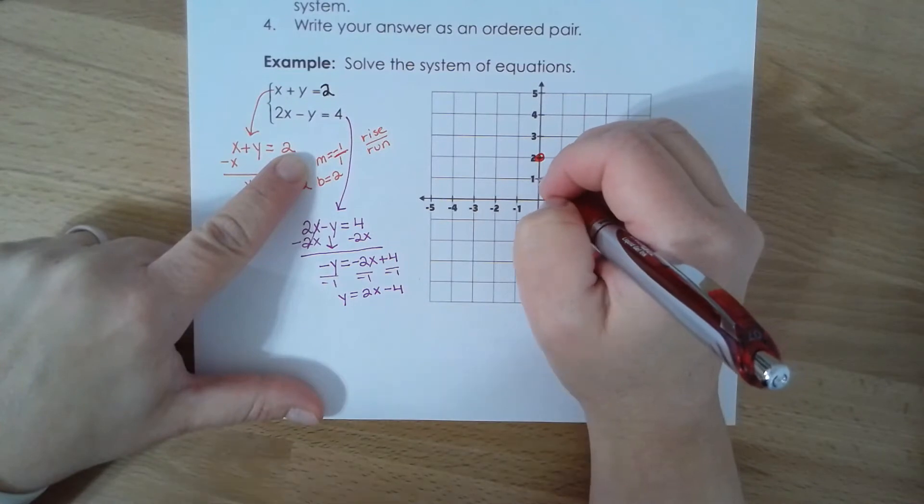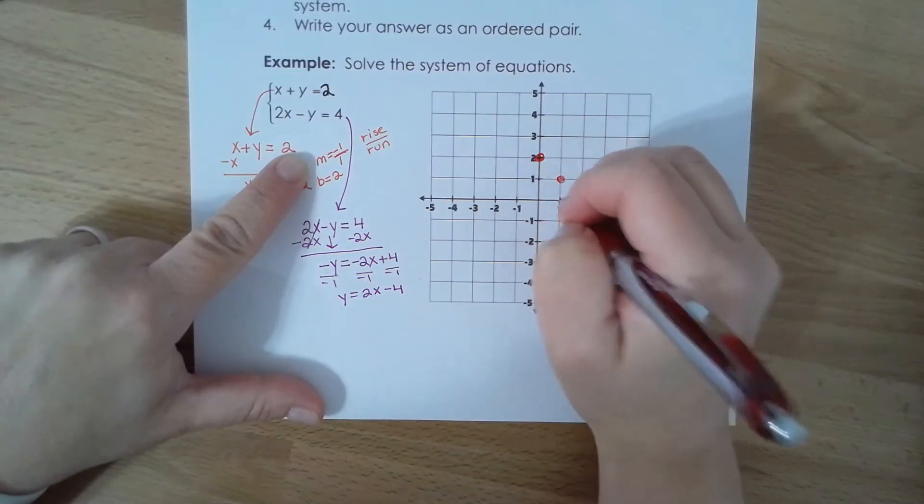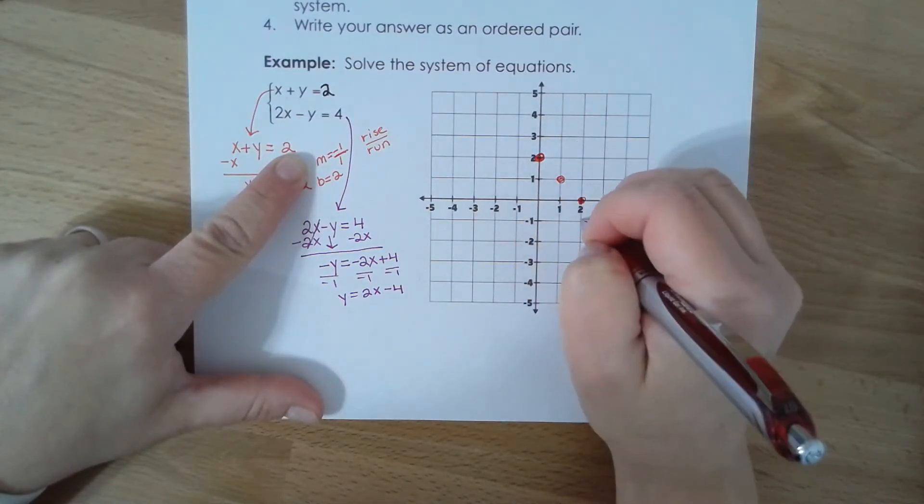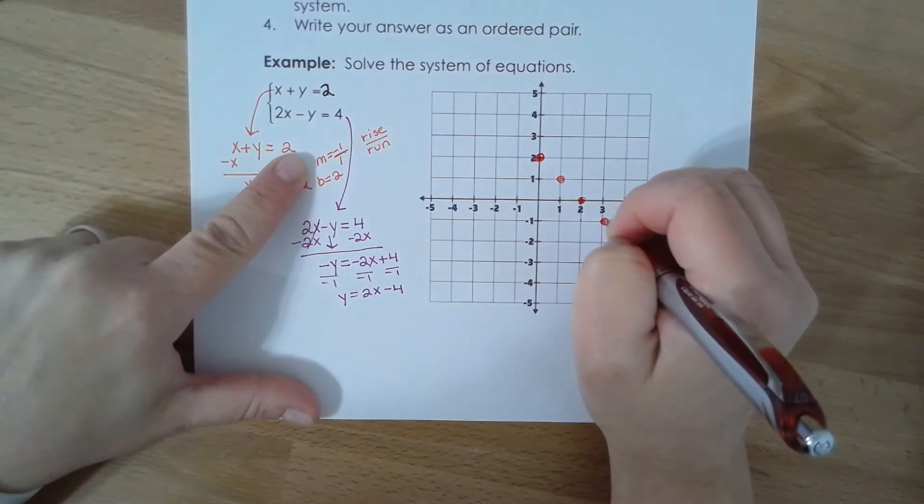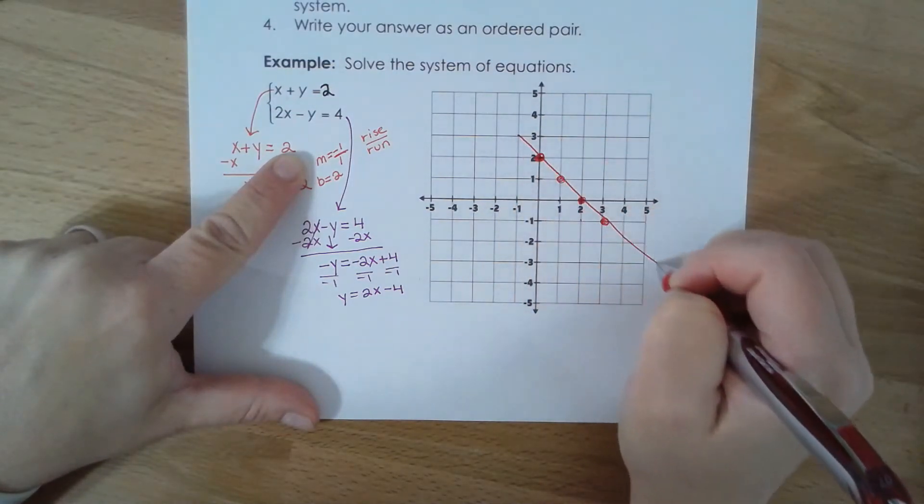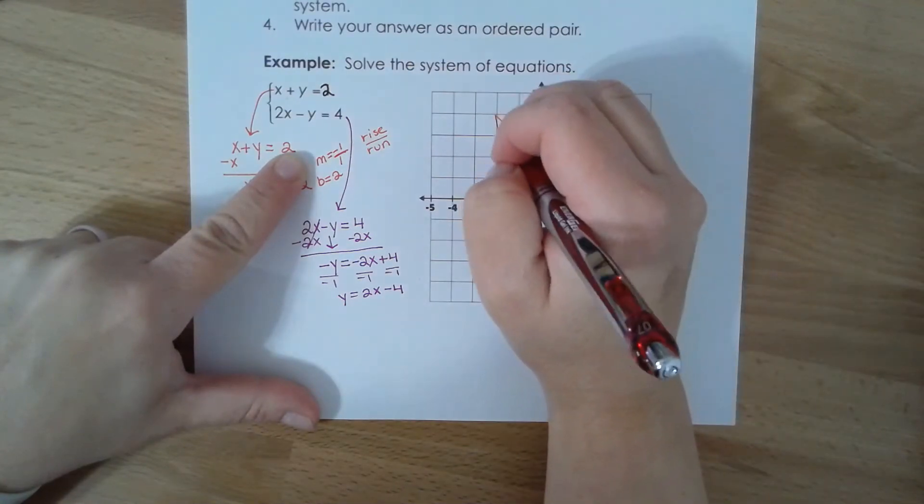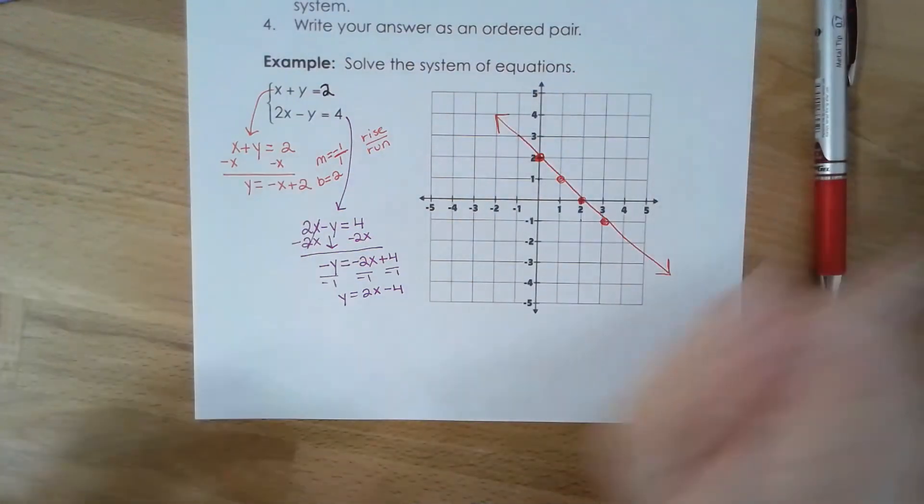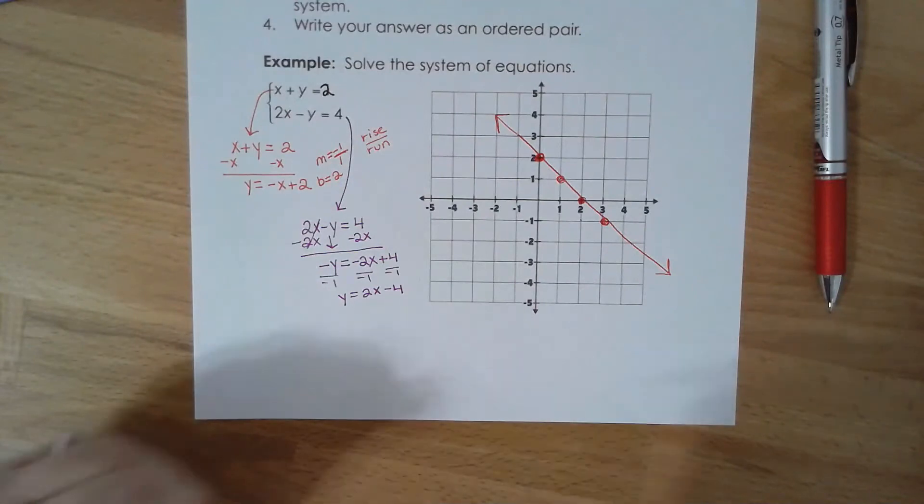So plot your b first. If my rise is negative it means I'm going down one, right one, down one, right one, down one, right one. I recommend you plot more than two points, especially if you don't have a ruler. Okay, so that's one line. Now I'm going to plot my second one.